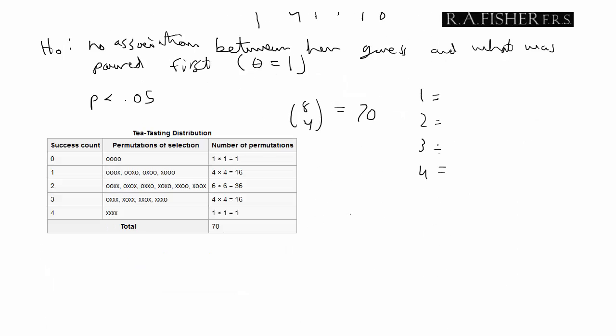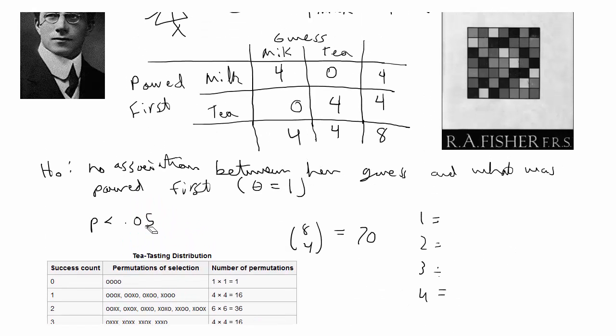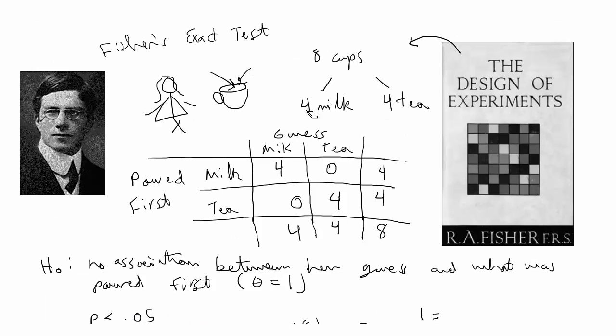There's another test called the Bernard's Exact Test, which is also used for contingency tables, that is considered more powerful than this test, although this test is still used, and people can use it with alternative hypotheses. You don't have to do just a null hypothesis, but I always liked this example of the lady tasting tea, so I just thought I would make a video of it.